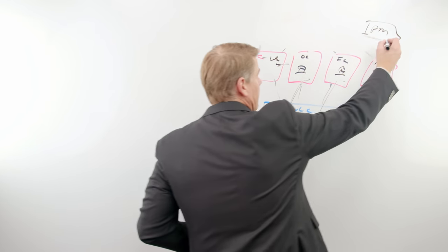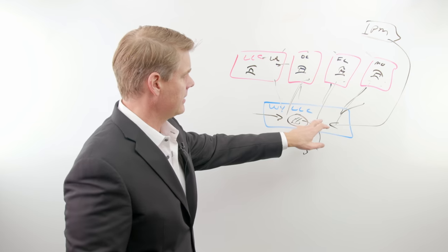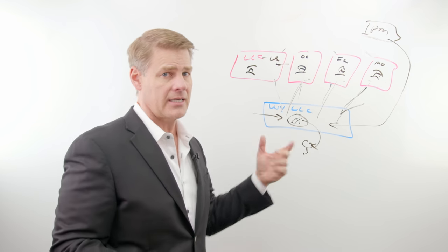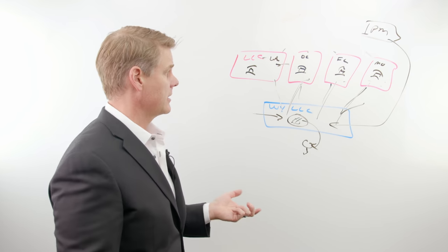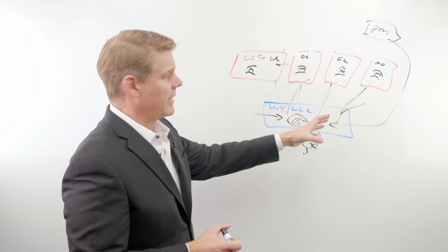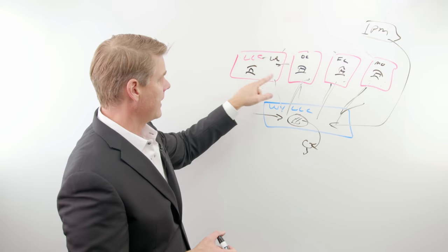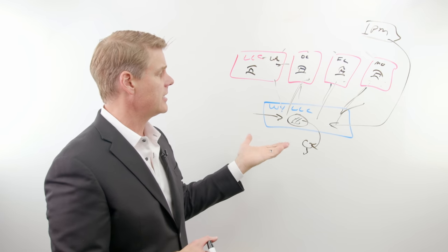And that property manager now will send the owner statement and the income to this LLC on a monthly basis. Now, this structure right here, I've set it up for many clients, and I tell them the exact same thing again. You have to have great books and records to account for all the income for these associated LLCs.